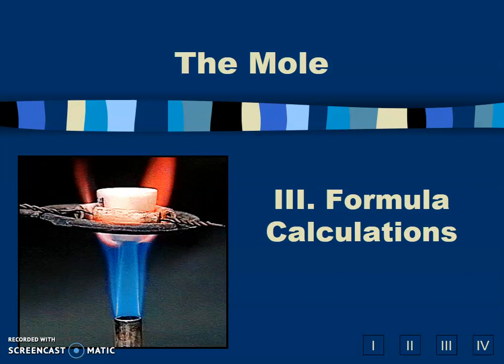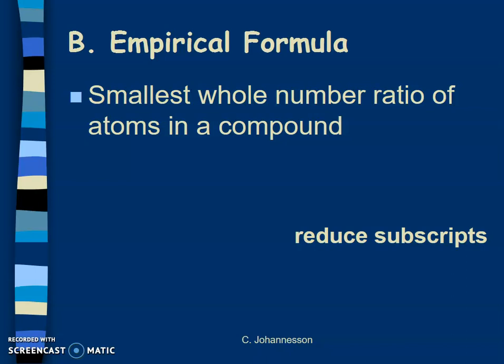Our next step is to be able to calculate an empirical formula. What is an empirical formula? It is the smallest whole number ratio of atoms in the compound - the smallest whole number ratio, meaning you have reduced the subscripts as far as they can go while still keeping that ratio intact.